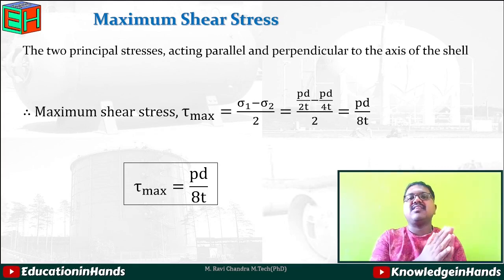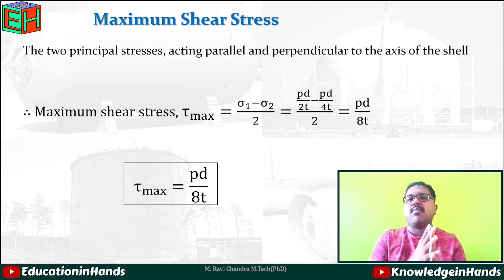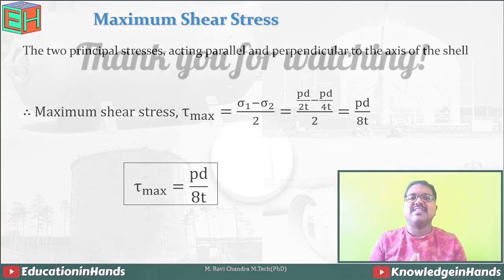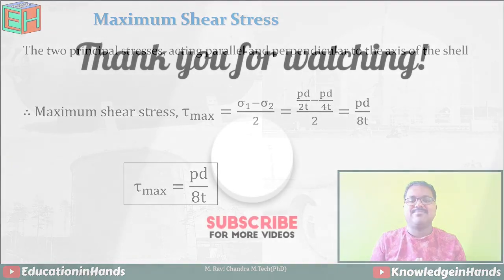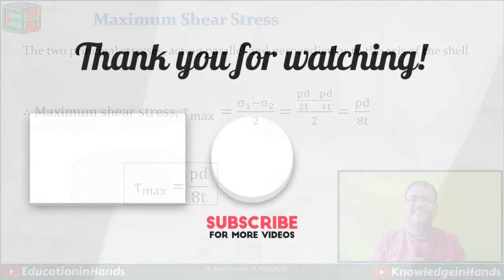So the values for sigma 1, sigma 2, and tau max in thin cylinders are PD/2T, PD/4T, and PD/8T respectively. With this knowledge we are going to solve some problems in the next video. Thank you, see you in the next video. Bye.